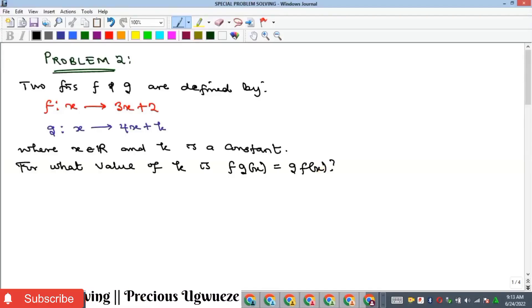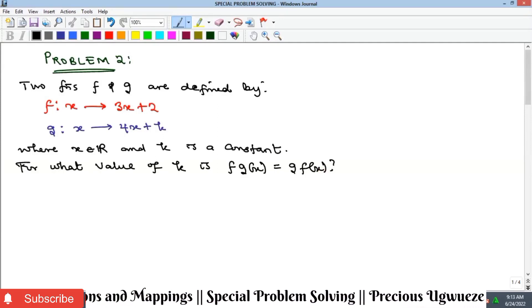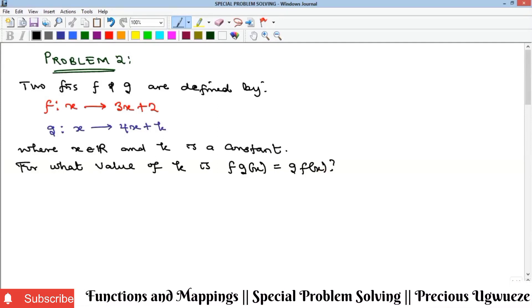All right, hello everyone. In this special problem we're going to look at problem 2. It says two functions f and g are defined this way. Now this is another way of defining a function, meaning instead of writing f(x) = 3x + 2, you can actually write it this way.